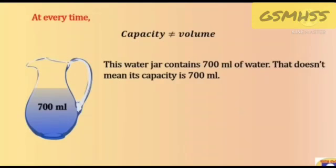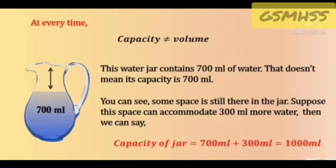Look at the jar. This water jar contains 700 ml of water. That doesn't mean its capacity is 700 ml. This jar contains 700 ml of water. However, it doesn't mean its capacity is 700 ml. We can see some space is still there in the jar. Suppose this space can accommodate 300 ml more water, then we can say capacity of jar equals 700 ml plus 300 ml equals 1000 ml.